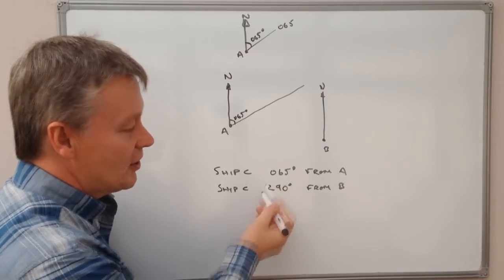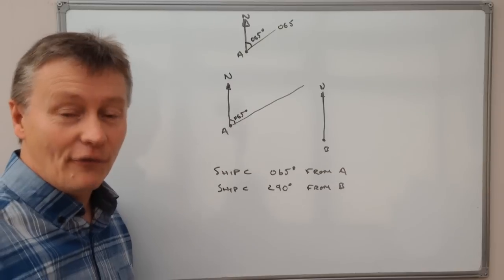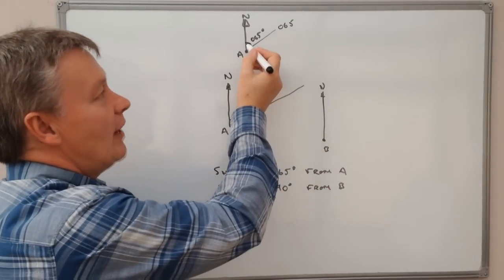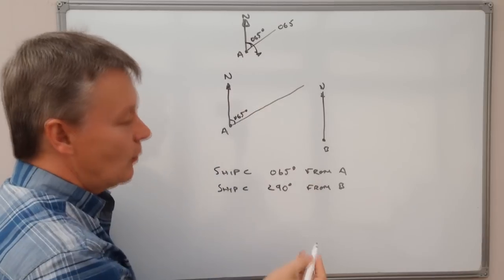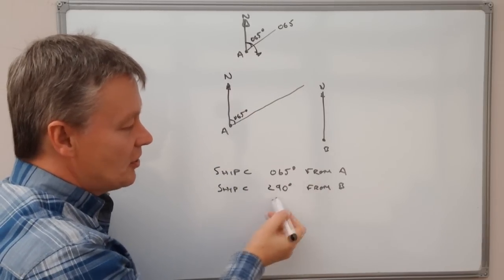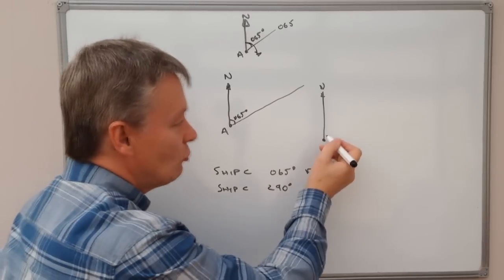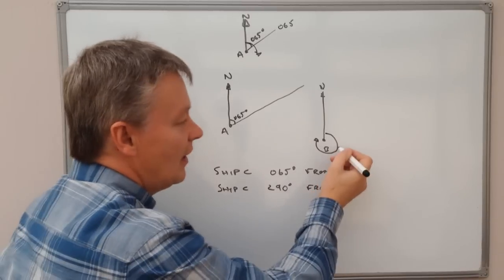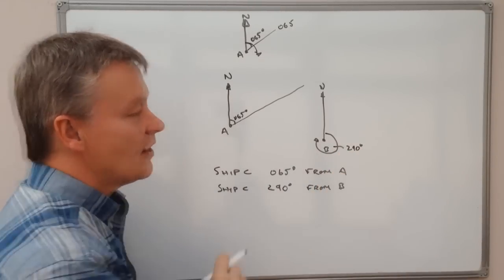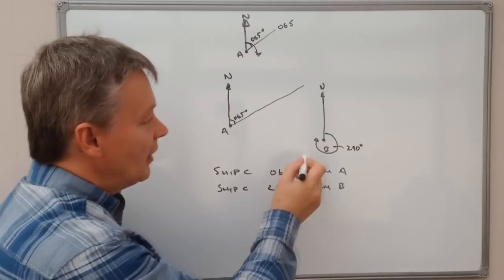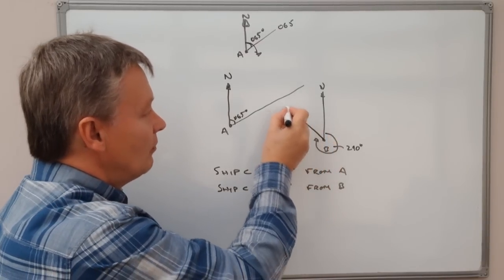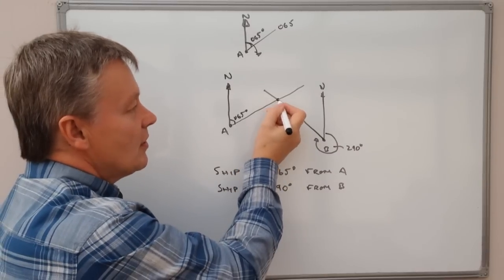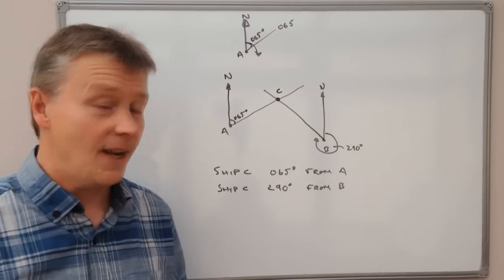The other information we're given is 290 degrees from ship B. Bearings always go right, so we're going to plot 290 degrees — it's going to be something like over there. We plot the line up like that, and where those two lines cross, that would be the location of C.